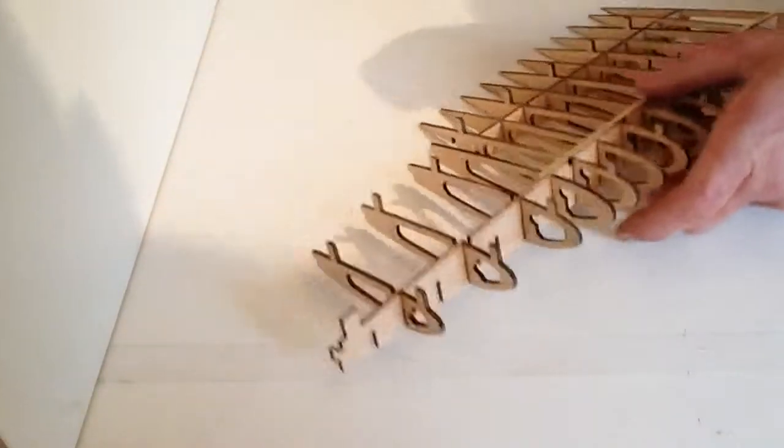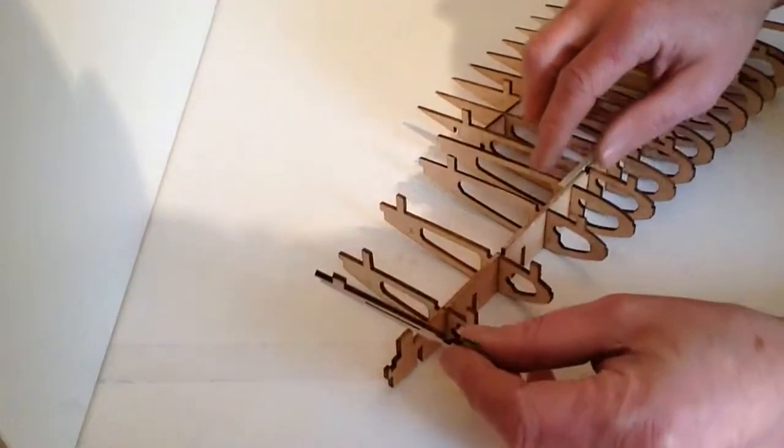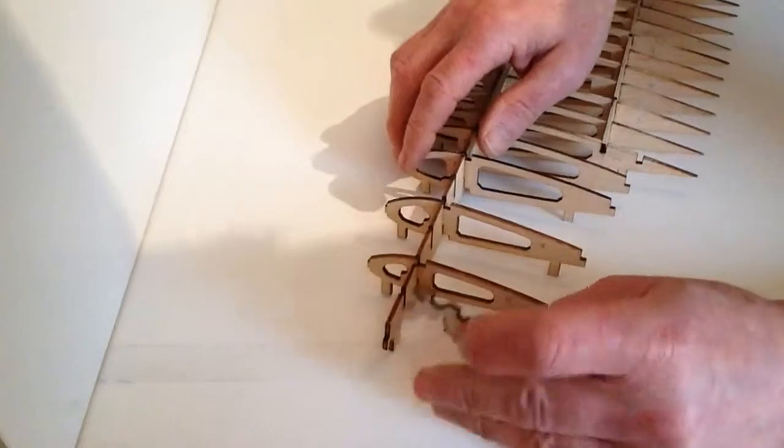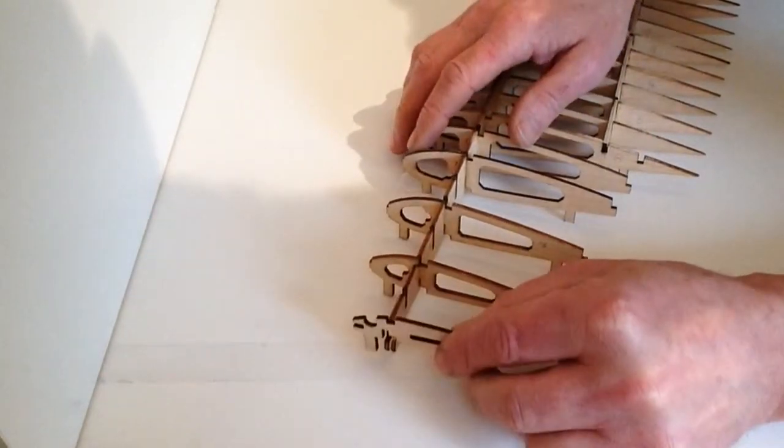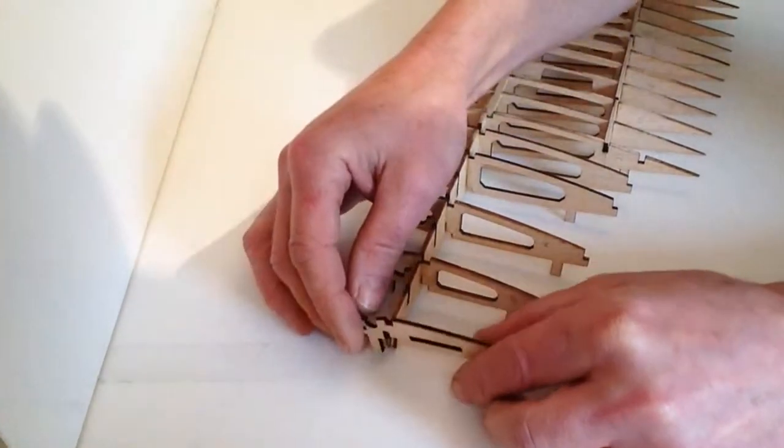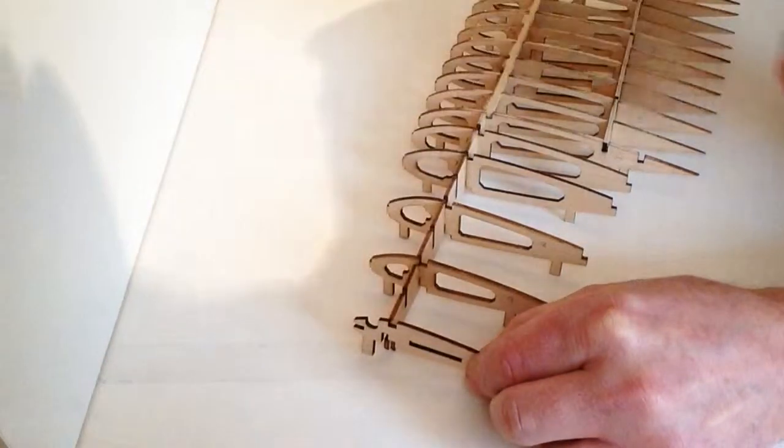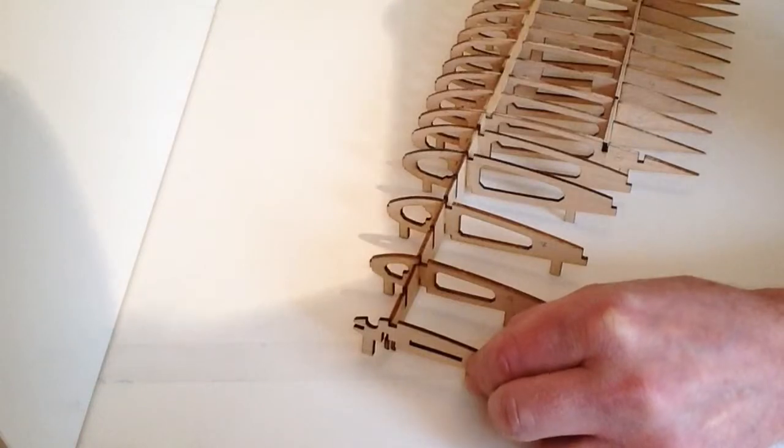Next, take rib 10 and we're just going to test fit that like so on the end. Get your glue ready and then we're just going to glue that on the end like so.